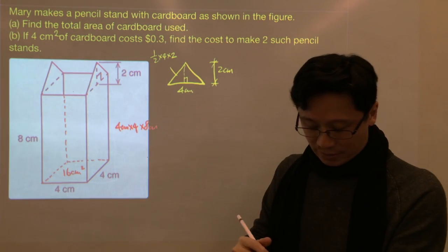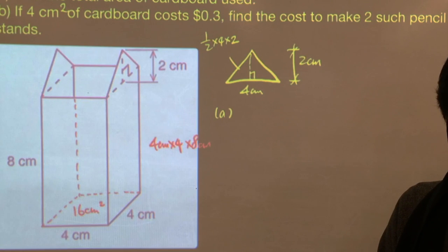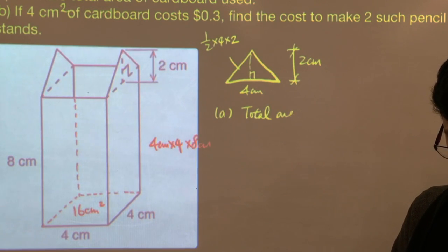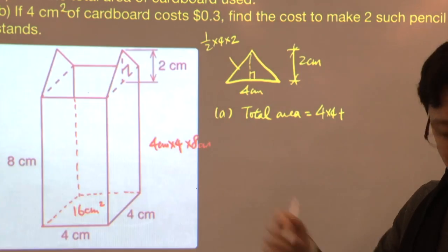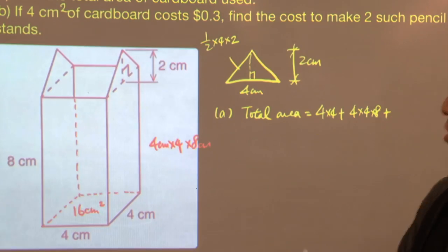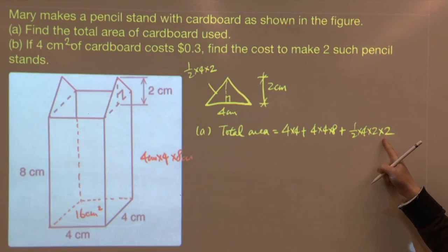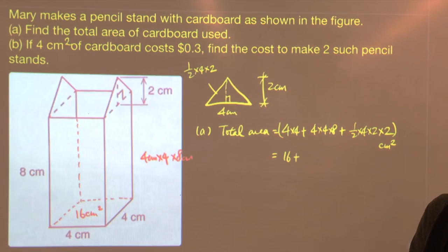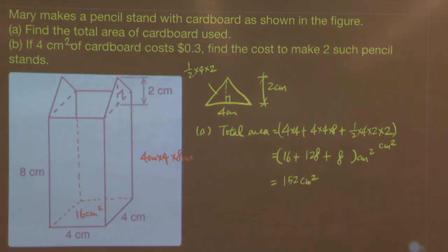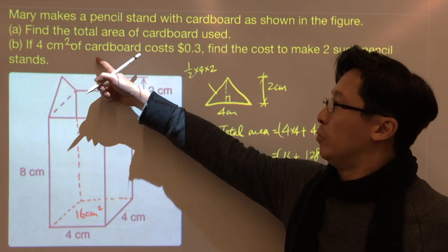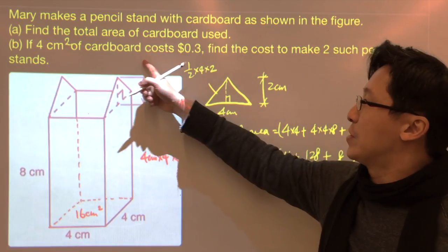And now we can write down the answer for part a. The total area will be 4 times 4 plus 4 times 4 times 8 plus triangle, and we need to multiply this by 2. Don't forget the unit, cm square. The answer is 152 cm square.